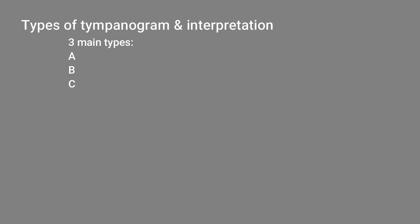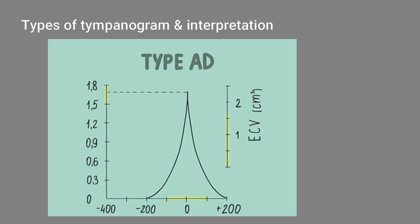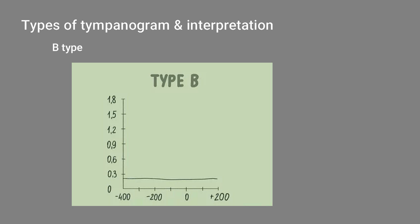Type A tympanogram can be divided into Type AS and Type AD. AS stands for stiffness — a normally shaped graph is obtained but compliance is decreased; if maximum compliance is less than 0.3 ml it is Type AS, seen in fixation of the ossicle as in otosclerosis. Type AD — D for discontinuation — is found in ossicular discontinuity or thin/relaxed tympanic membrane; compliance is abnormally high but pressure is near ambient, with compliance more than 1.5 cc.